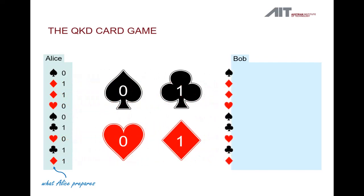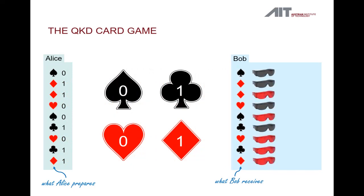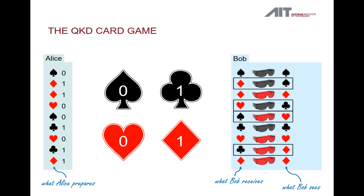She then sends her deck of cards to Bob, who will use goggles to look at the cards and identify the symbols. Not knowing the color of each card, he has to guess which goggles to use — the black or the red ones. Wherever he used goggles of the wrong color, he will see a symbol that does not correspond to the actual card sent by Alice. Now, Alice and Bob call each other and compare the colors. Alice reveals the color, but not the symbol, of each card. Bob reveals the color of the goggles he used for each card. They discard all the cards that were looked at through the wrong goggles. Finally, they end up with an identical binary string on both sides. After some further processing, this will be their encryption key.